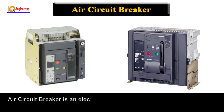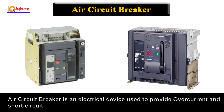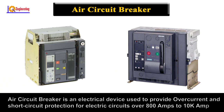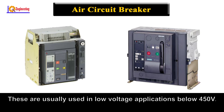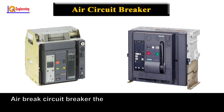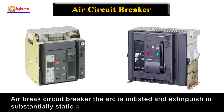Air circuit breaker. An air circuit breaker is an electrical device used to provide overcurrent and short circuit protection for electronic circuits over 800 amps to 10,000 amps. These are usually used in low voltage applications below 450 volts. The arc is initiated and extinguished in substantially static air in which the arc moves.